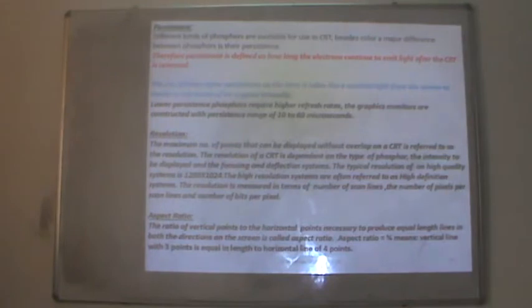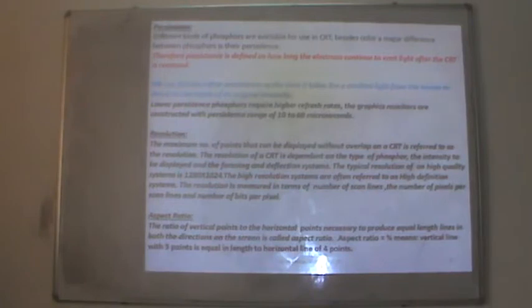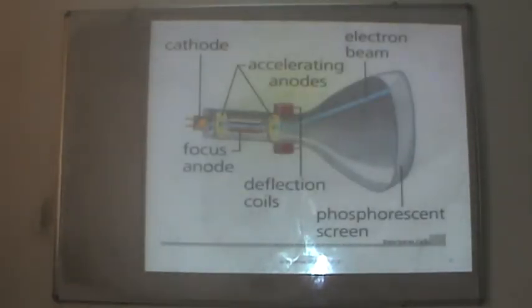The third definition is aspect ratio: the ratio of vertical points to horizontal points necessary to produce equal-length lines in both directions on the screen. The aspect ratio is 3:4, meaning a vertical line with 3 points is equal in length to a horizontal line of 4 points. The CRT diagram here shows the cathode, accelerating anodes, deflection coil, the beam, and the phosphorous screen.